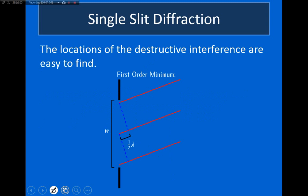Now, it turns out in general, it's kind of a little challenging to find the positions of the maxima that form from a single slit interference. However, it's relatively simple to write down a formula for the destructive interference.